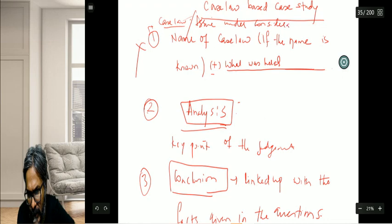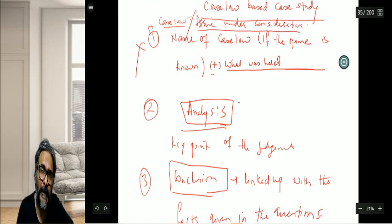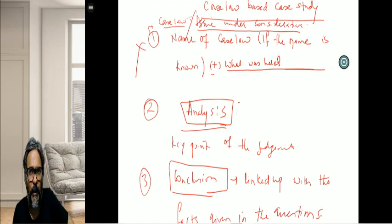Issue under consideration is what you'll write as point number one when you don't know the name. Once the issue has been written briefly, do the analysis and conclusion. That is how you will end your case law-based question. This is a three-point format and you have to write the header the way I've shown you. See you in the next segment, thank you students.